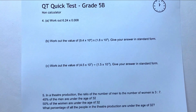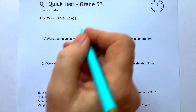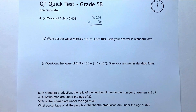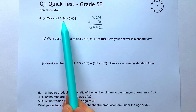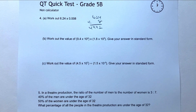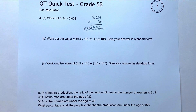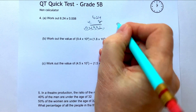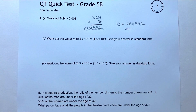Question four: 6.24 × 0.008. Ignore the decimal point and calculate 6.24 × 8 to get 4.992. The decimal point has moved a total of five places, so move it back five places, inserting a zero: the answer is 0.04992.